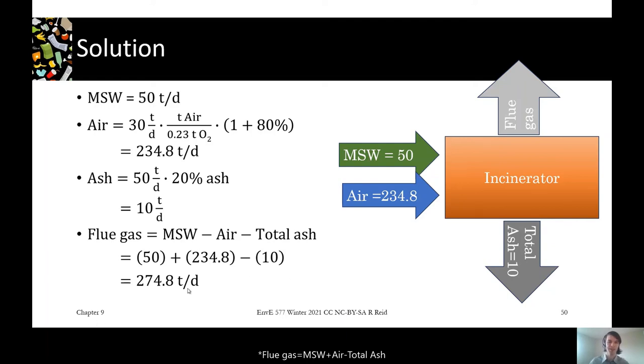274.8 tons of air is quite a bit of air. As you'll see in the air pollution control section, when we look at how much of the incinerator is actually devoted to air pollution control, it's about half the plant. There's a lot of machinery and energy and effort involved in just dealing with all this flue gas. Similar to compost in that way, it inherently produces a lot of air that needs to be treated.